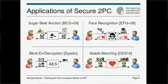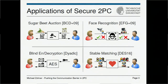Finally, we have the Stable Matching application where the two parties hold a list of participants and each participant has a ranking or priority. The secure computation protocol is there to satisfy the overall happiness, computing a matching where all participants are happy.